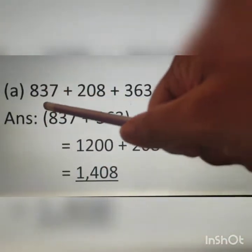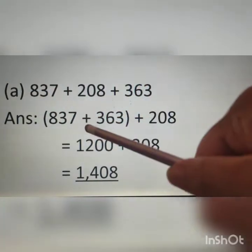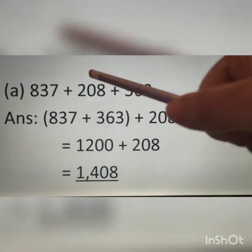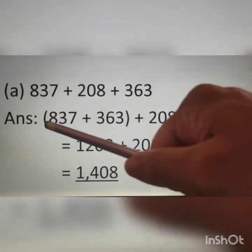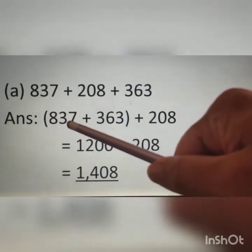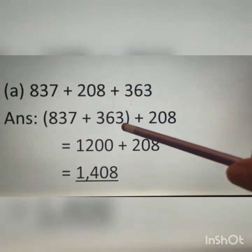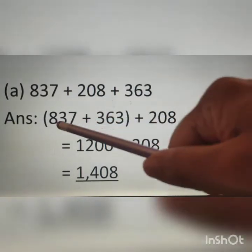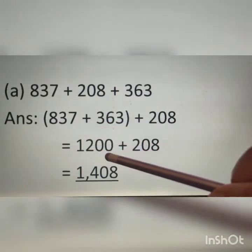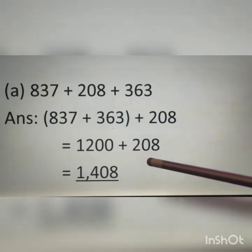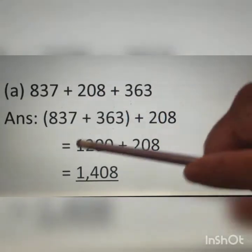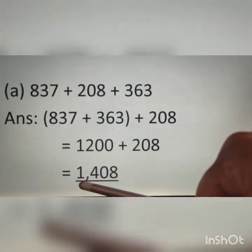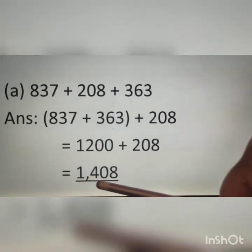So I put 837 plus 363 in a bracket, plus 208. Therefore, 837 plus 363 is calculated first because it is in the bracket. The total is 1200 plus 208, which equals 1408.